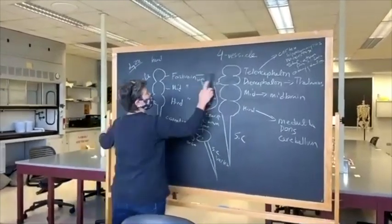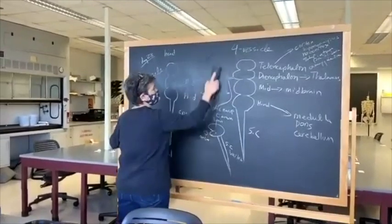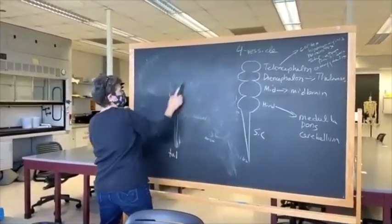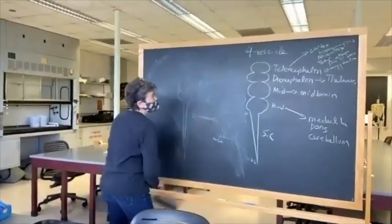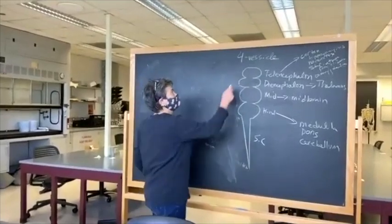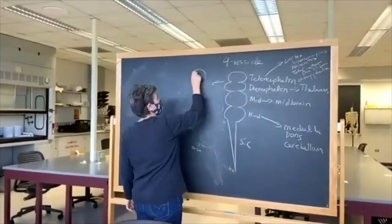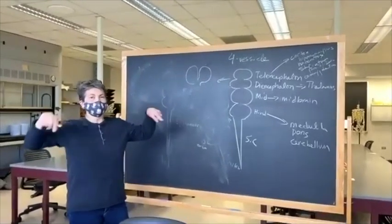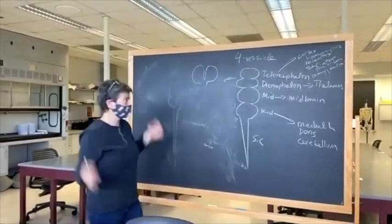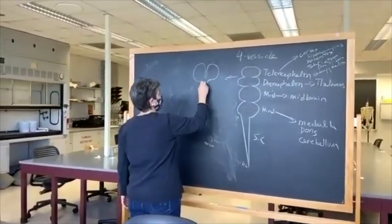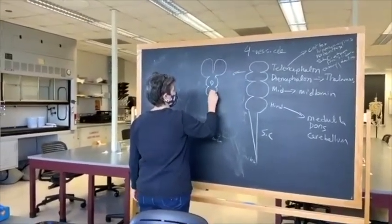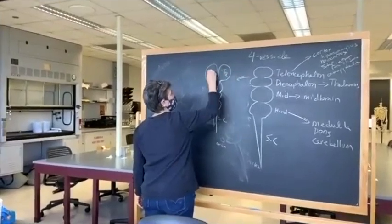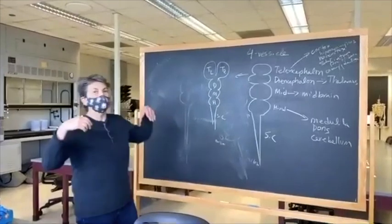The telencephalon does not look like a single bulb for very long. What happens is that it invaginates down the middle and forms two telencephalic hemispheres. These are going to become the two cerebral hemispheres — the left and the right — and that's going to connect to the diencephalon, which connects to the midbrain, which connects to the hindbrain, which connects to the spinal cord.